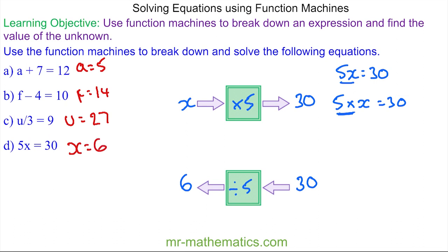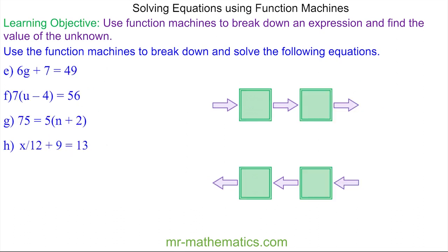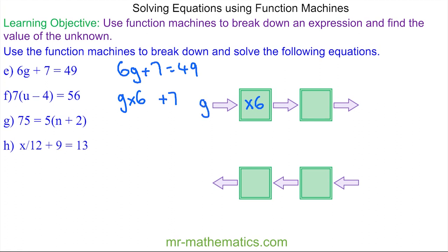Let's move on to solving equations involving two steps. For question e, the equation 6g + 7 = 49 has two functions. We begin using the order of operations — multiplication first. So g goes in, we multiply it by 6, and then we add 7 to get 49 as the output. To work the problem backwards, we have 49, take away 7, then divide by 6.